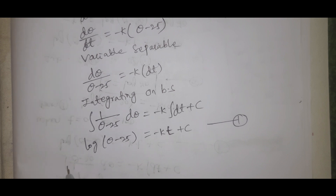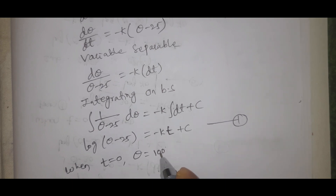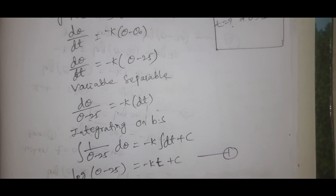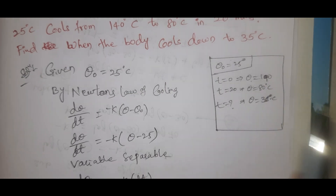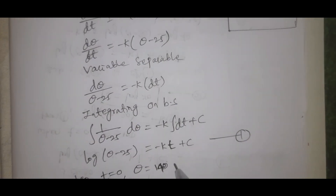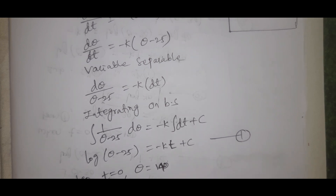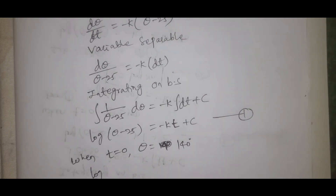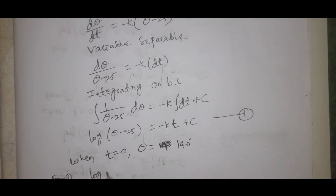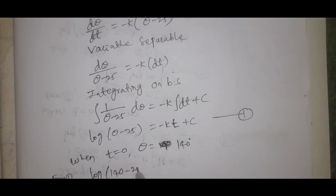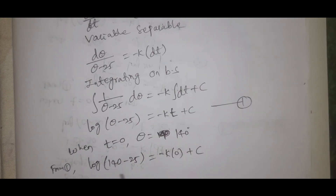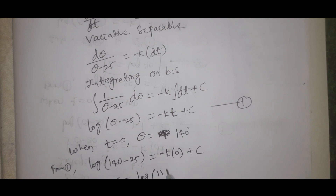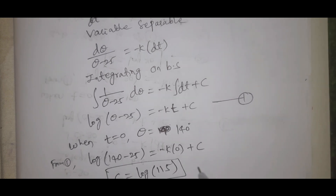When t equals 0, theta equals 140 degrees. Substituting into equation 1: log(140 minus 25) equals minus k times 0 plus c. Therefore c equals log(115). This is equation 2.